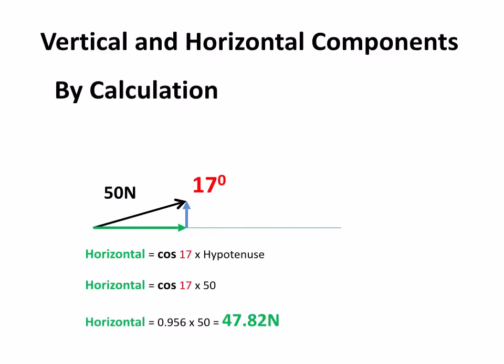The horizontal is the cosine of the angle times the hypotenuse gives me 47.82. And the vertical, again, is the sine of the angle times the hypotenuse, which gives me 14.62 newtons.